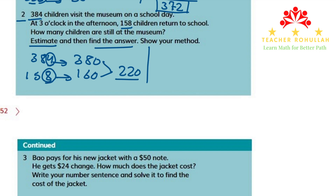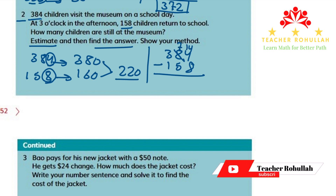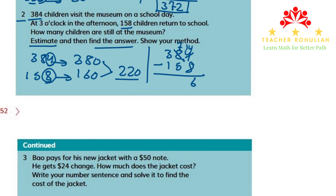Let's now find the exact number of students still at the museum. To do so, we will subtract 158 from 384. So 384 minus 158: we cannot subtract 8 from 4, so we regroup and borrow from 8. 8 becomes 7 and 4 becomes 14. Now 14 minus 8 is 6, and 7 minus 5 is 2, and 3 minus 1 is also 2. So 226 students are left at the museum, which is very close to the estimated answer.